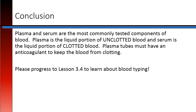Conclusion: Plasma and serum are the most commonly tested components of blood. Plasma is the liquid portion of unclotted blood, and serum is the liquid portion of clotted blood. Plasma tubes must have an anticoagulant to keep the blood from clotting. Please progress to Lesson 3.4 to learn about blood typing.